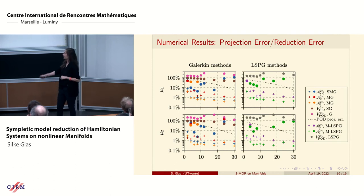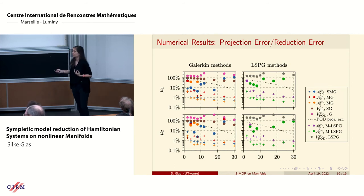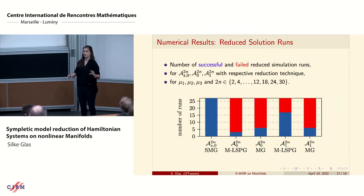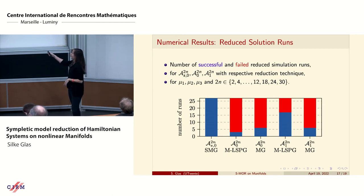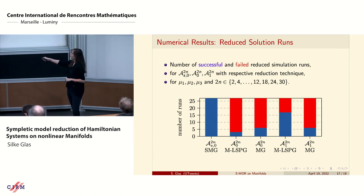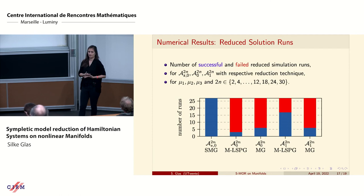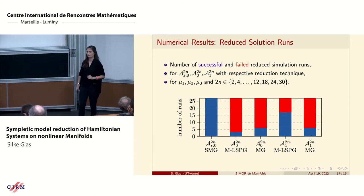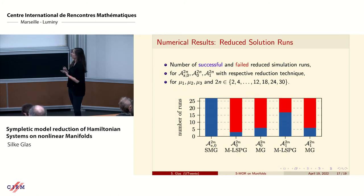For the non-symplectic configurations, some points are missing or lie on top of each other because we observe failed runs — the reduced simulation did not converge within a fixed number of quasi-Newton iterations. Across three parameters with nine different configurations, the symplectic manifold Galerkin succeeds every time, whereas for every non-symplectic auto-encoder at least a third of runs do not succeed. This further motivates using symplectic reduction to preserve Hamiltonian structure.